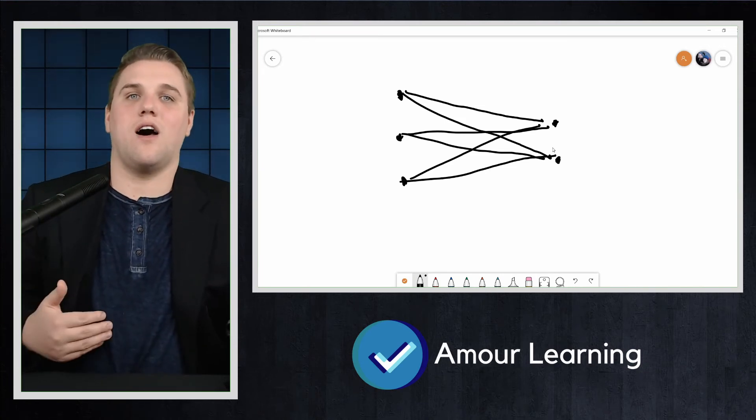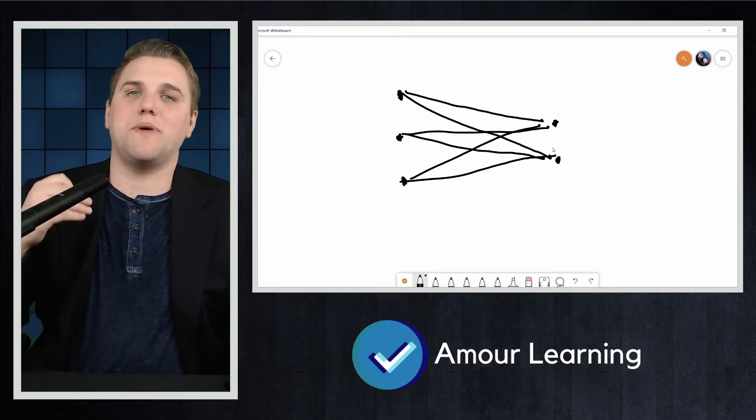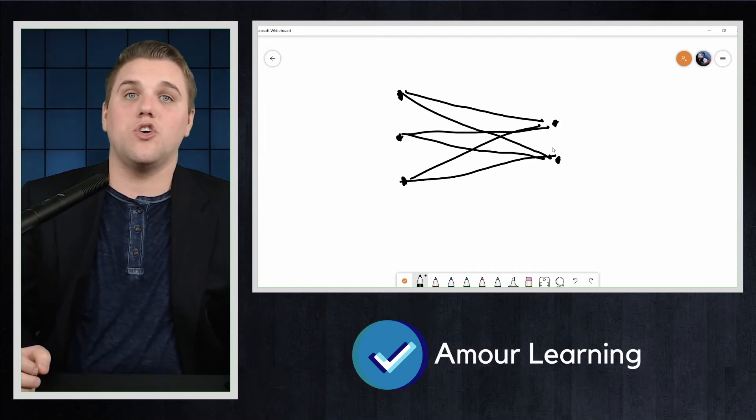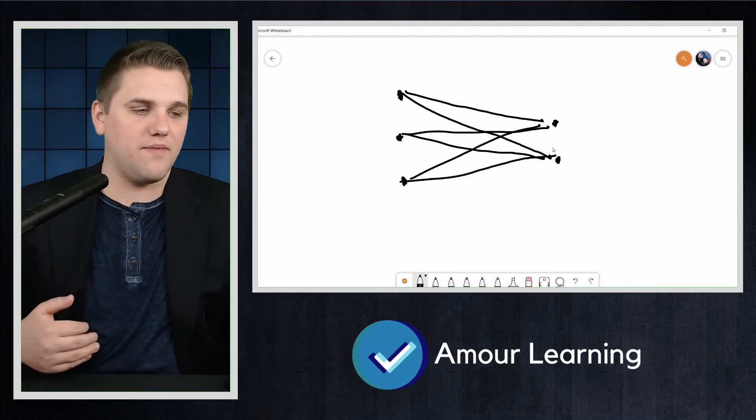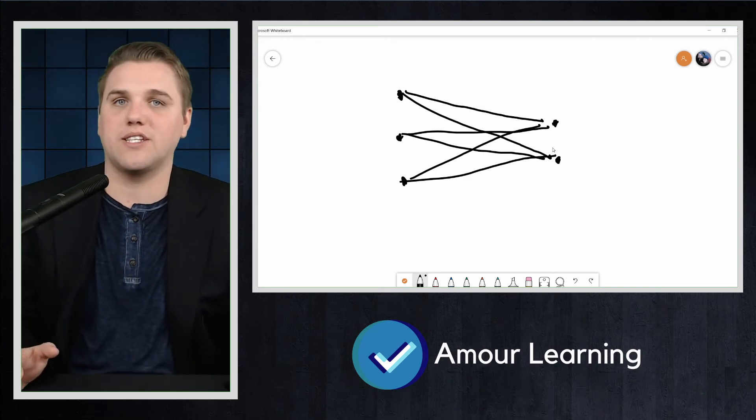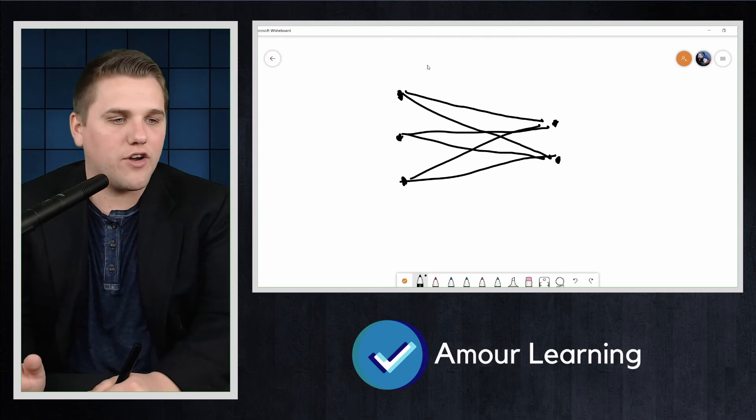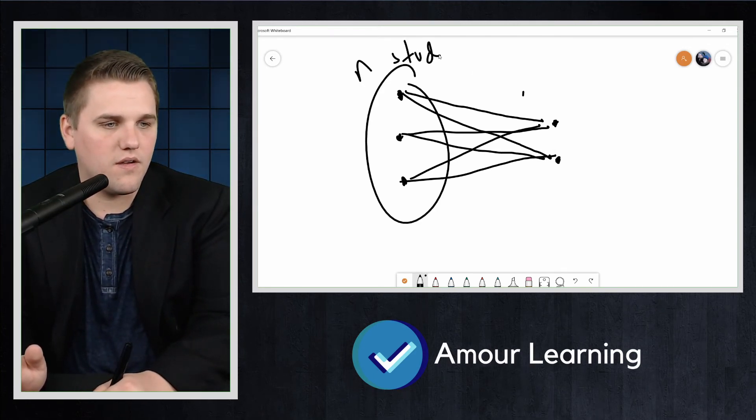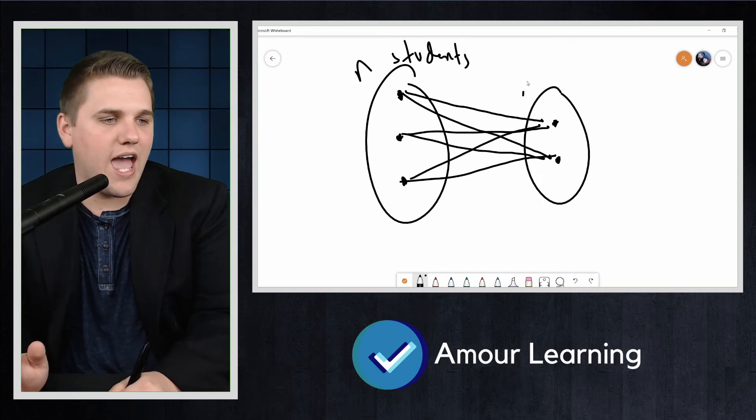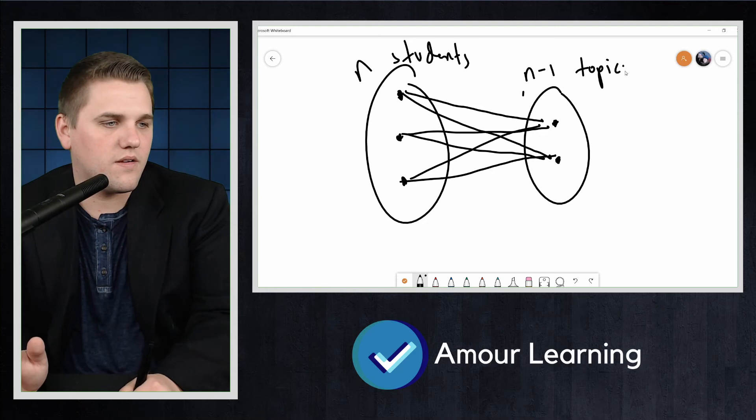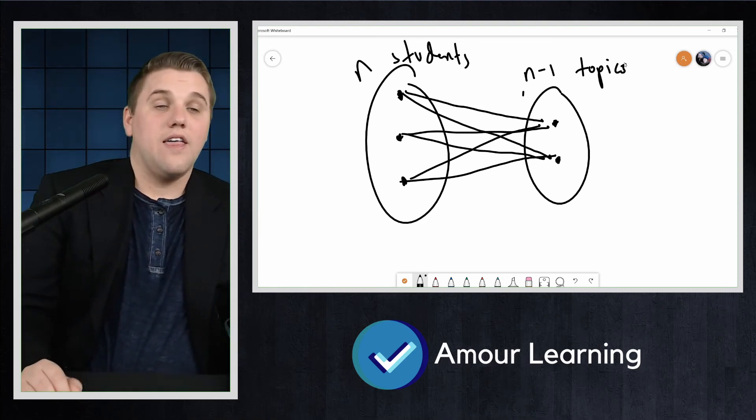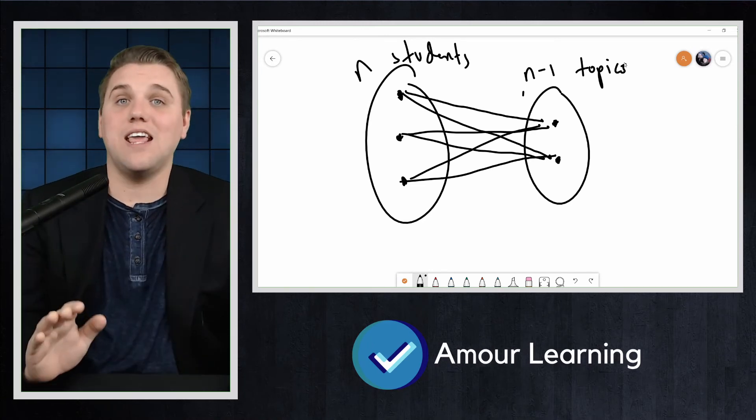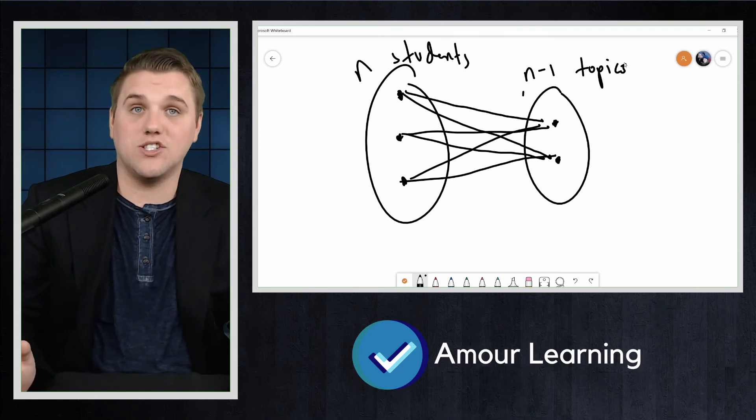We can continue this way with more and more students. It should be clear at this point that if there is every group of n students who has a group like n minus one or fewer topics, then no matching is possible. So again, if you have a group of n students that all like n minus one topics, then that would be a problem. So then no matching is possible. This is true for any value of n and any group of n students.